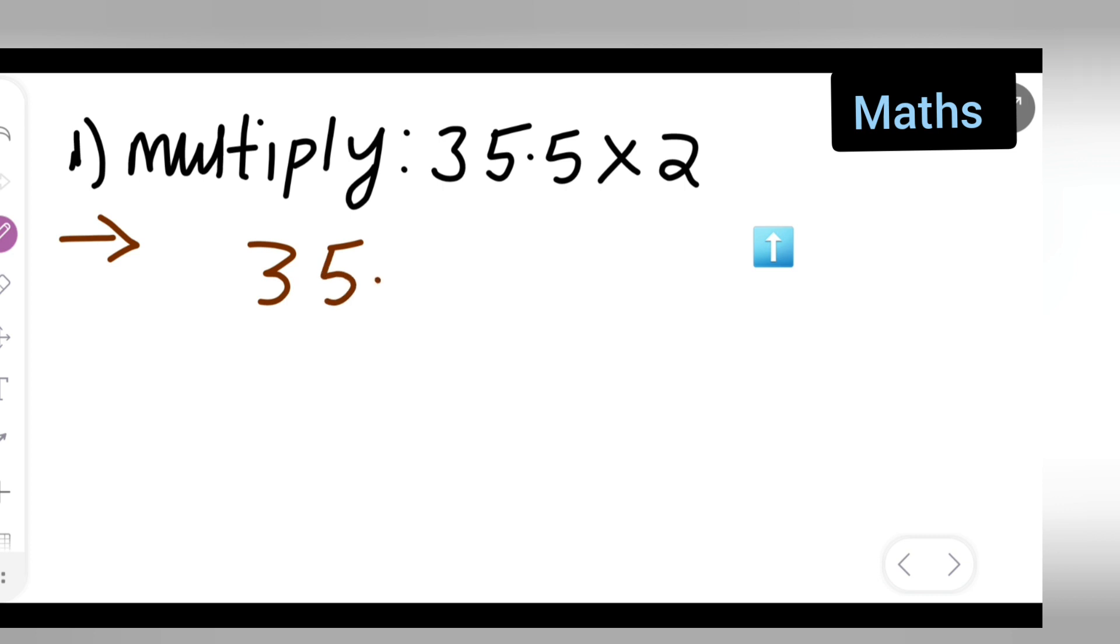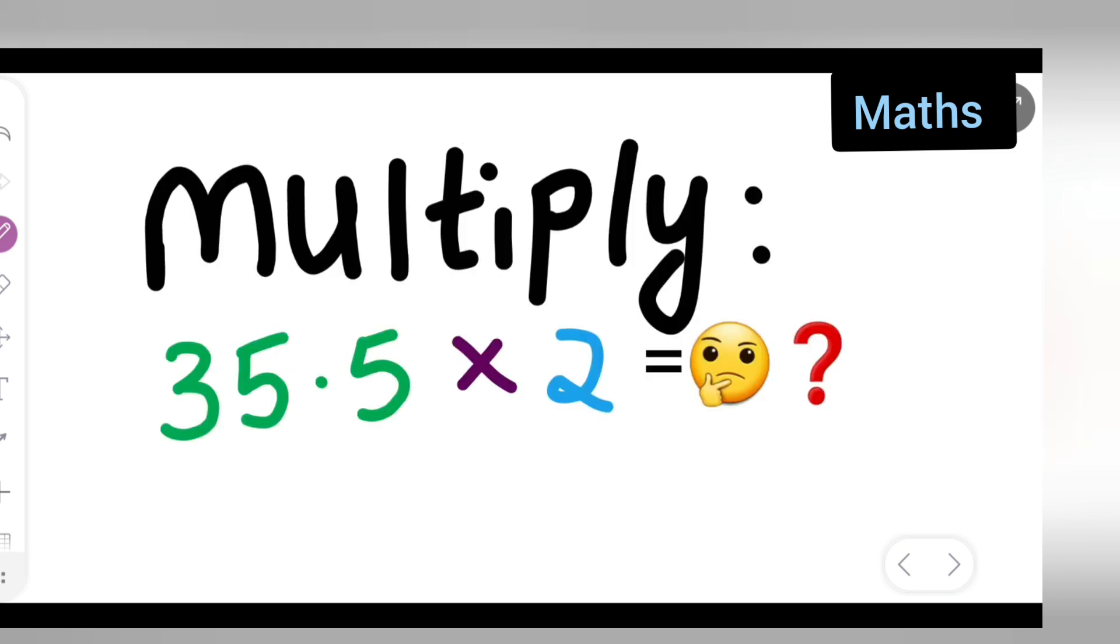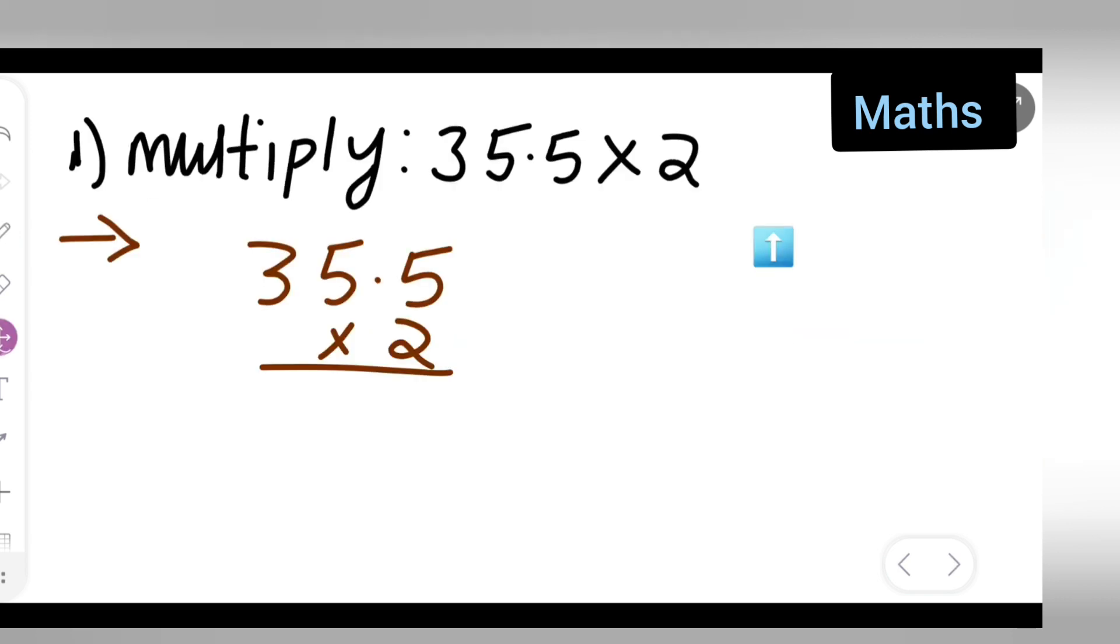35.5 multiply it by 2. Okay, so now what I'll have to do is: two fives are ten, write down zero over here, carry one over here.